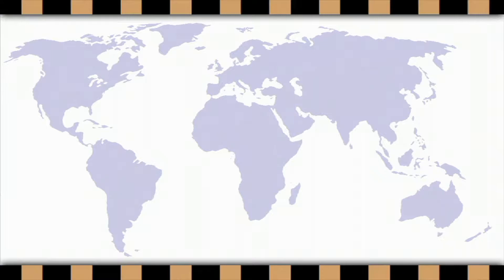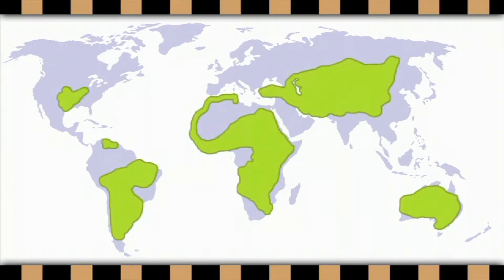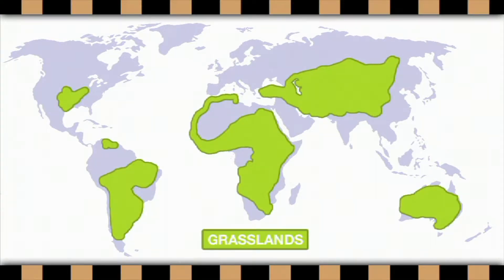Grasslands are found on every continent except Antarctica. Grasslands have different names in different parts of the world.